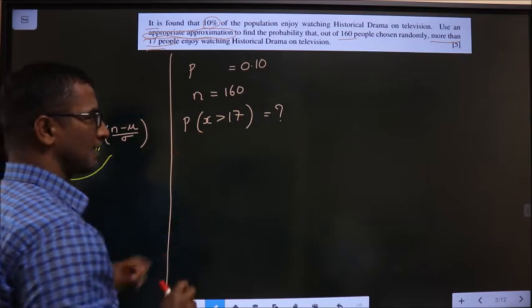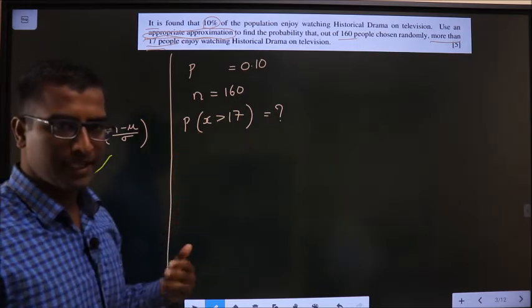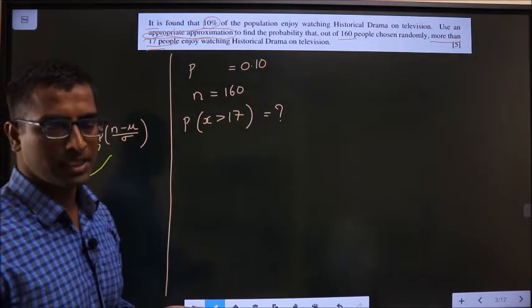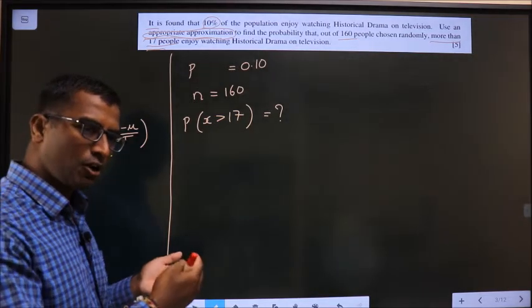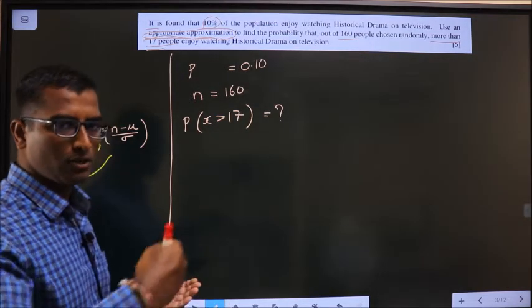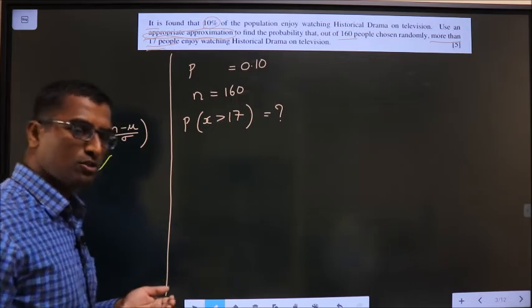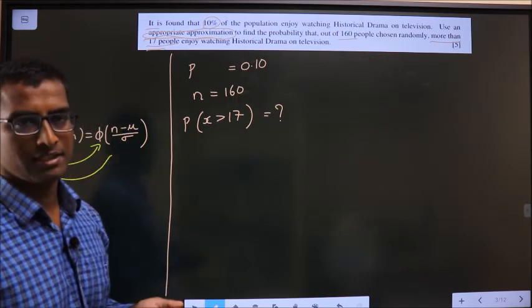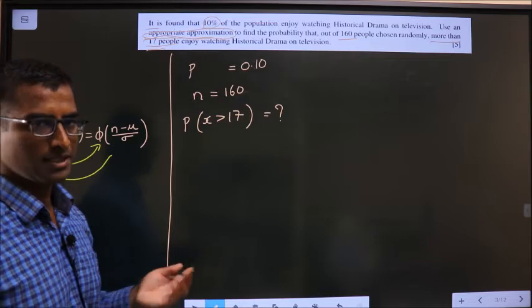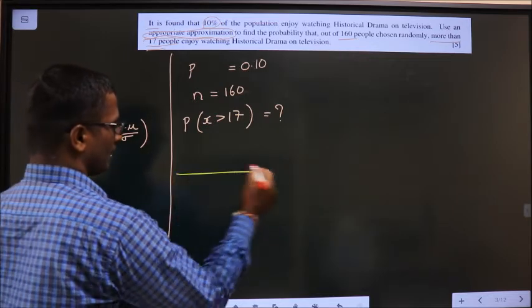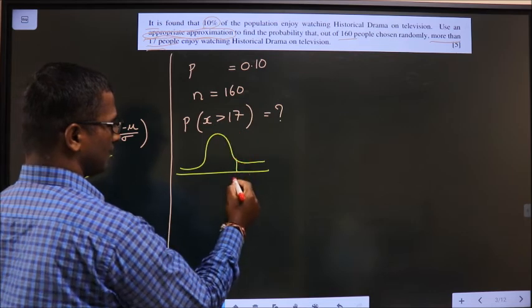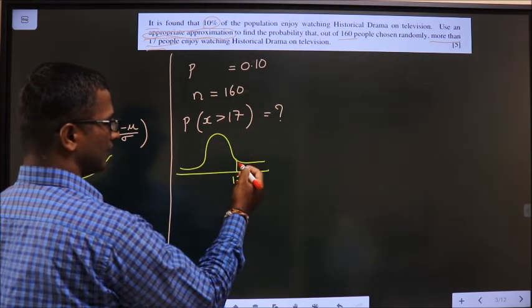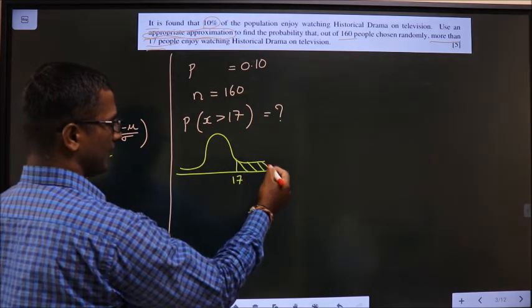Now come here. Here he said x greater than 17. One more thing here. Here normal distribution is not mentioned, you want to use it. So whenever normal distribution is not mentioned and you are using, you should do 0.5 correction. What do I mean is, let us say this is a normal curve and 17 is here.